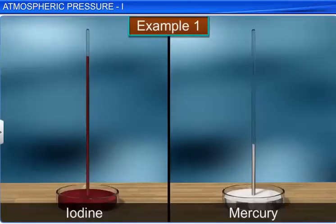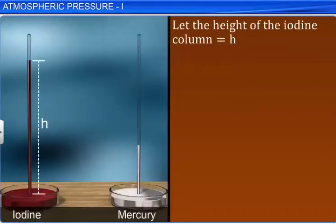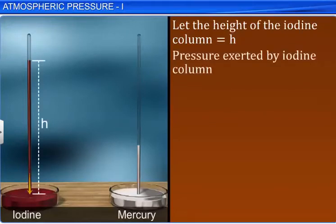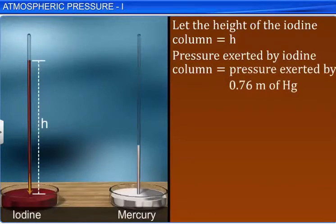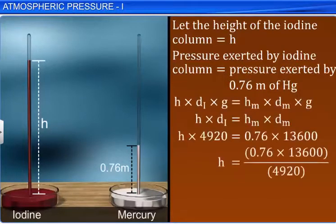Example 1: Instead of mercury, if iodine of density 4,920 kg/m³ is used in a barometer, what will be the length of the iodine column if the atmospheric pressure is 76 cm of mercury? Let the height of the iodine column be H. The pressure exerted by the iodine column equals the pressure exerted by 0.76 meters of mercury. Substituting and simplifying the values, we get the height of the iodine column as 2.1 meters.